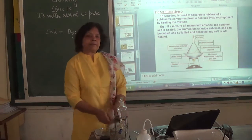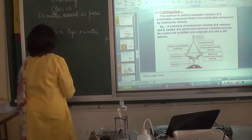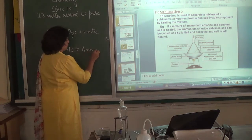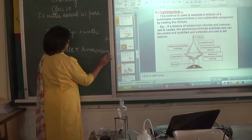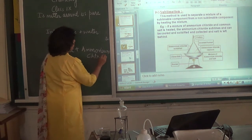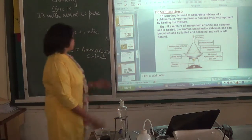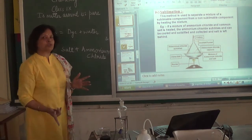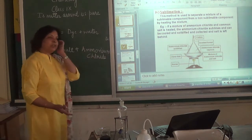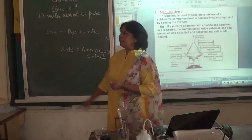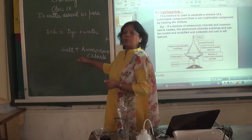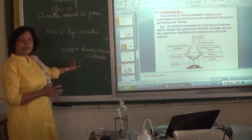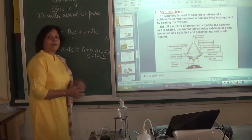Next, suppose you are given a mixture of salt and ammonium chloride. Whenever we select a technique, we always look at the properties of the two components. We find that ammonium chloride directly changes into vapor on heating — this process we call sublimation — whereas salt does not change into vapor. So we can easily separate ammonium chloride and salt by sublimation.